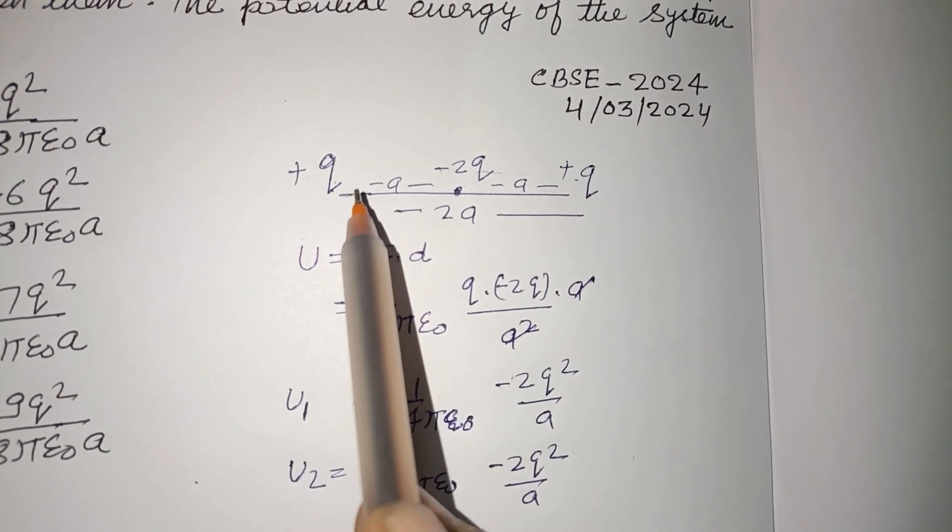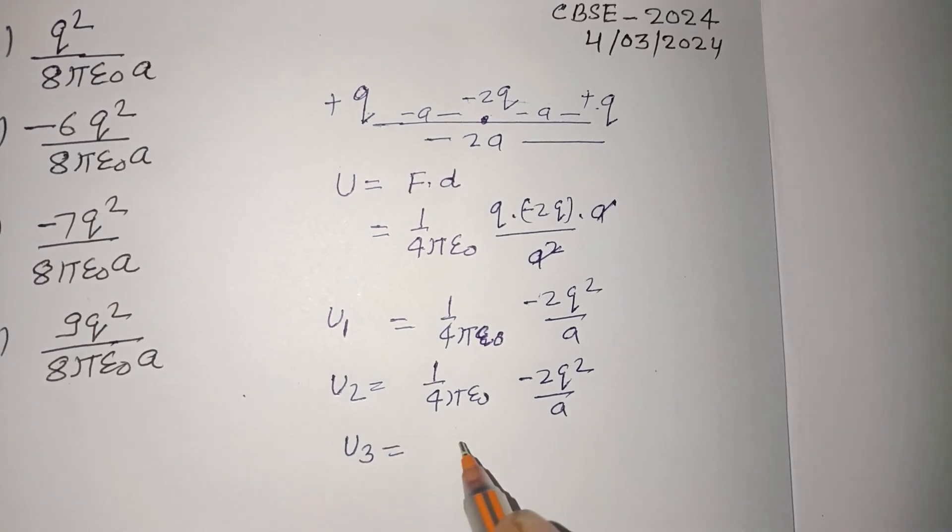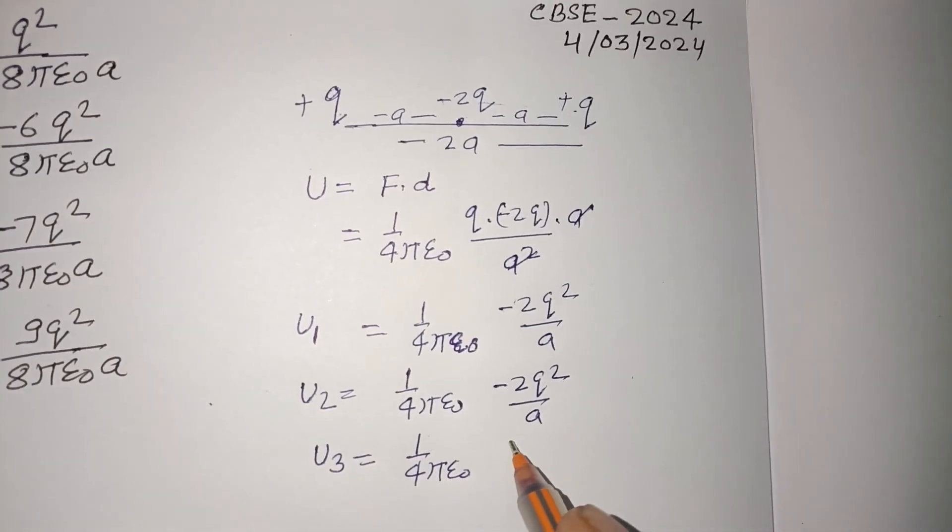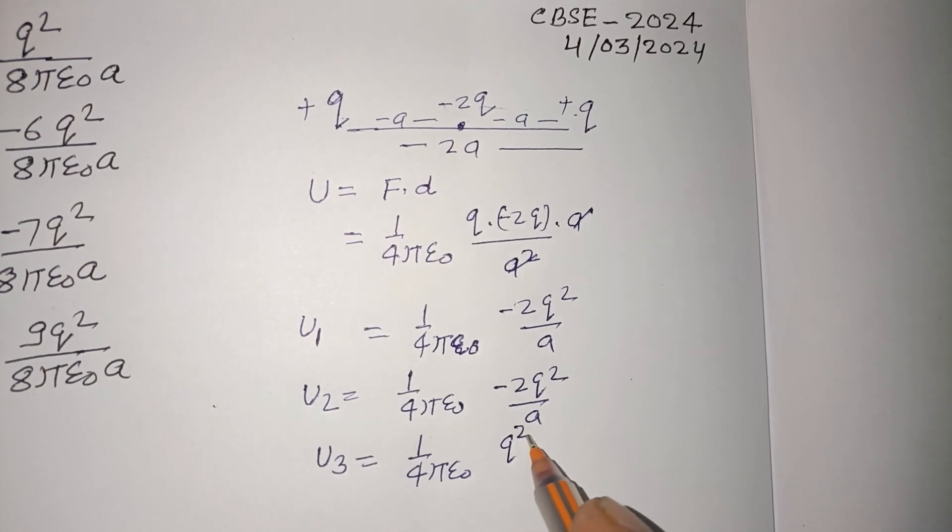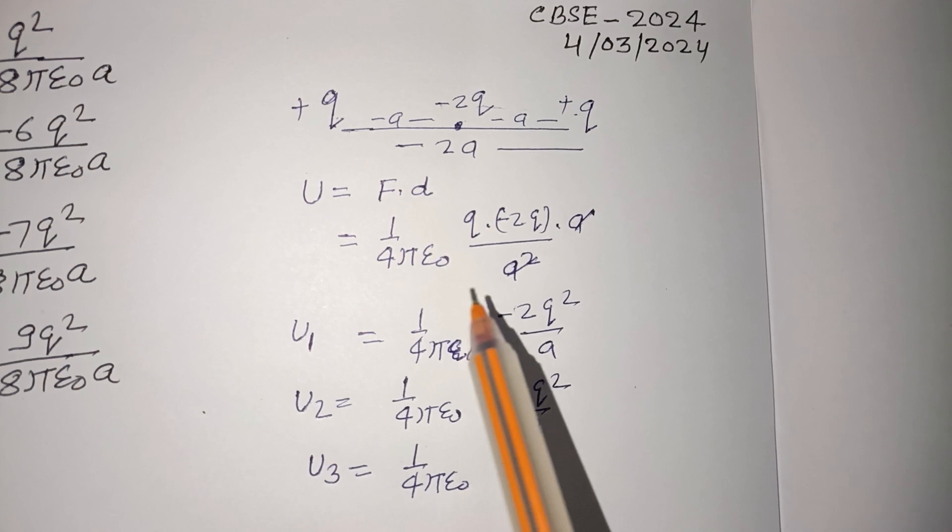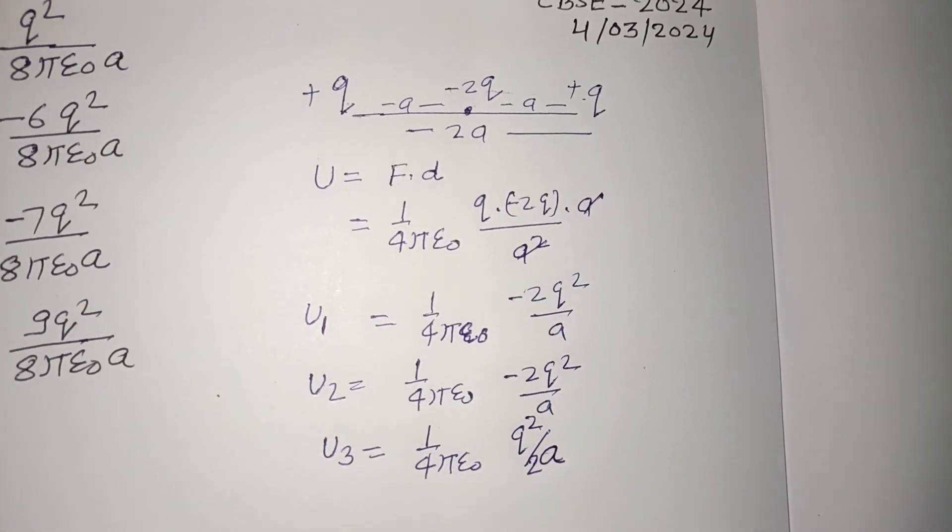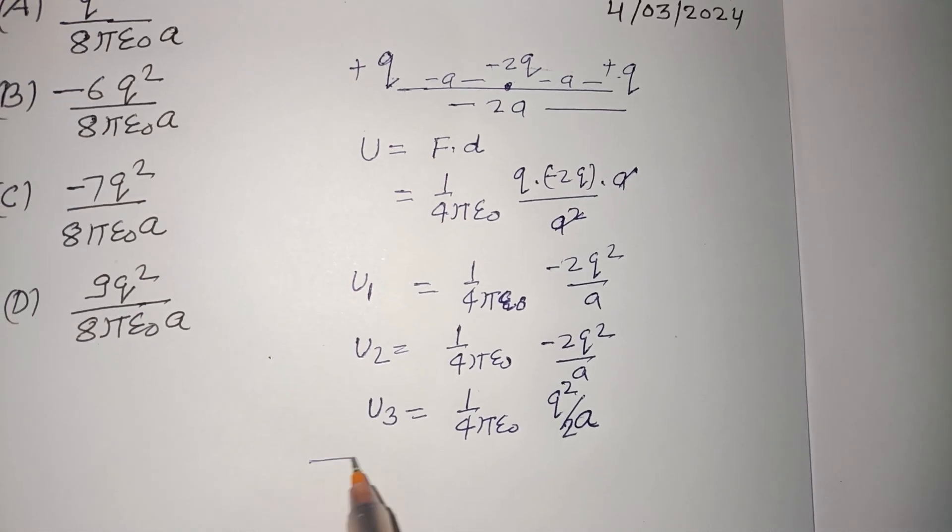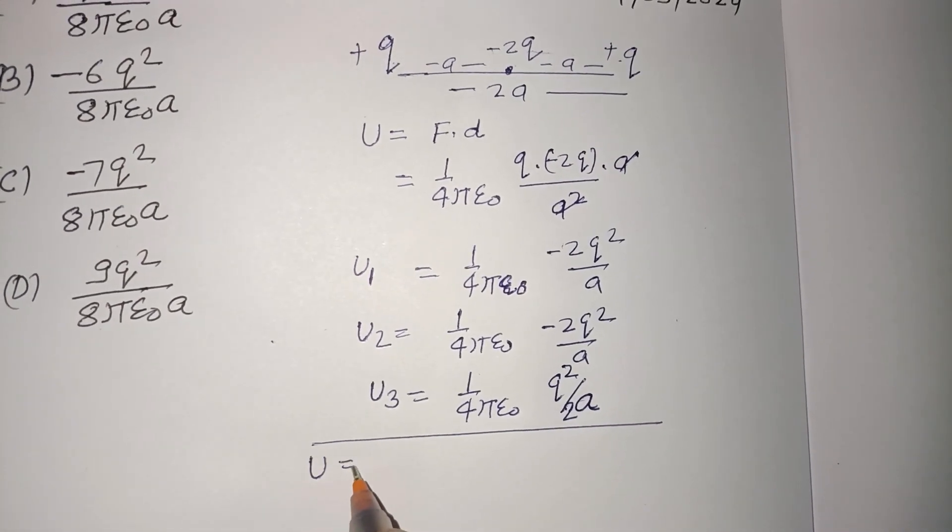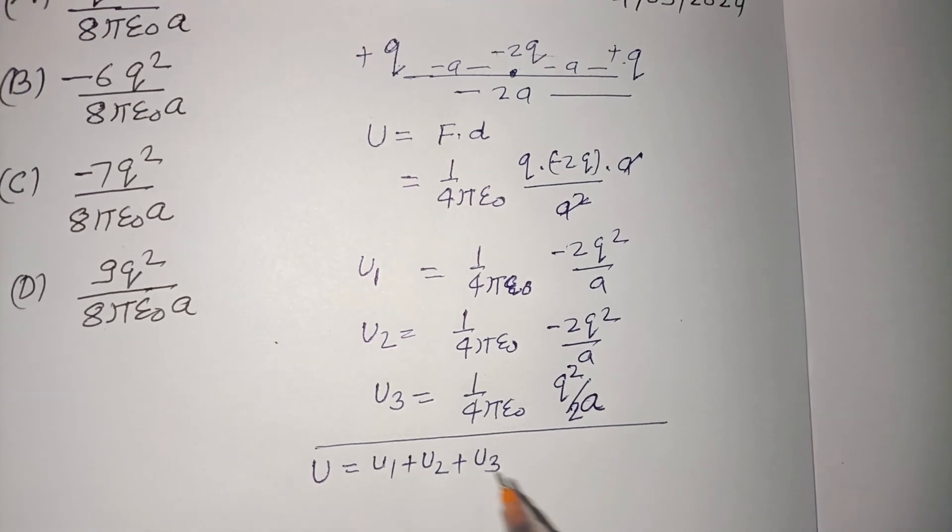Now, potential energy between Q and Q, so this is 1 upon 4πε₀. Total potential energy of this system is U = U₁ + U₂ + U₃.